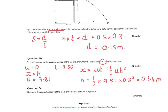Question 5c: calculate the vertical velocity at the moment it strikes the ground. Using v equals u plus at, with initial velocity 0, we get 9.81 times 0.3, which equals 2.94 metres per second.